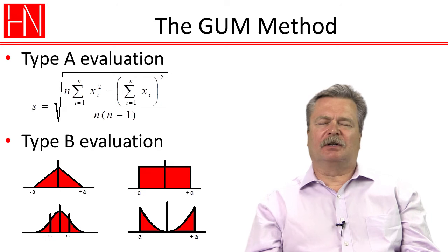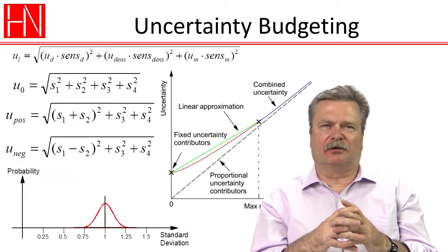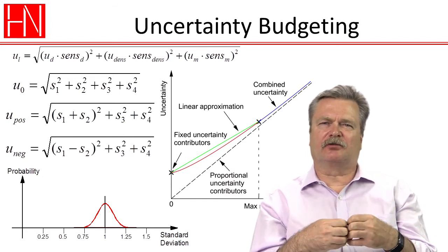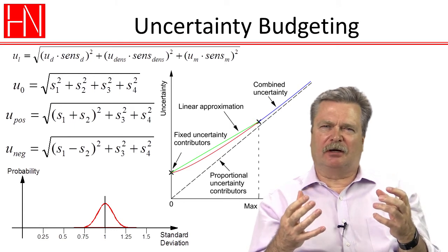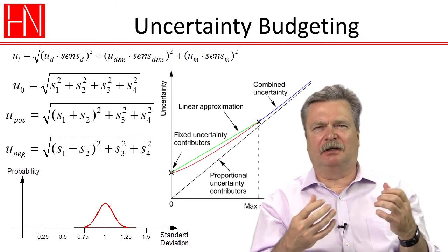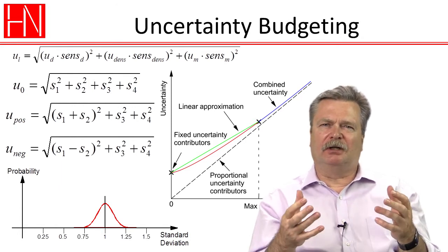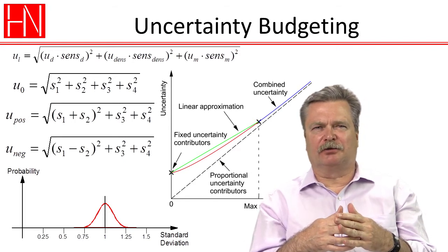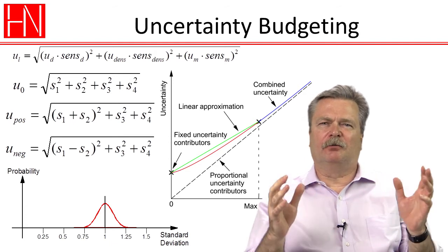Then we talked about how we add these contributors together, and we talked about how to add uncorrelated contributors together as the square root of sum of squares. And we talked about if we have correlated contributors, how we would add those linearly or subtract them from each other linearly depending on whether it's positive or negative correlation before we square them together with the remaining contributors.